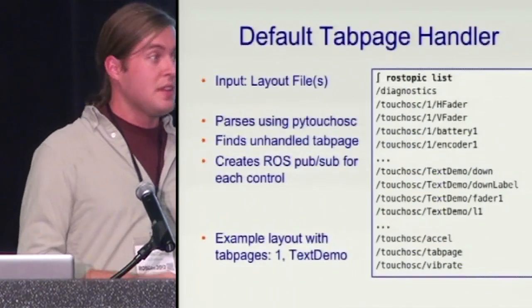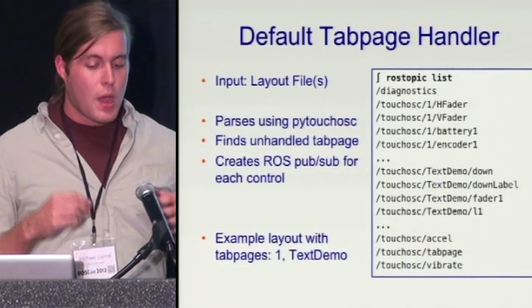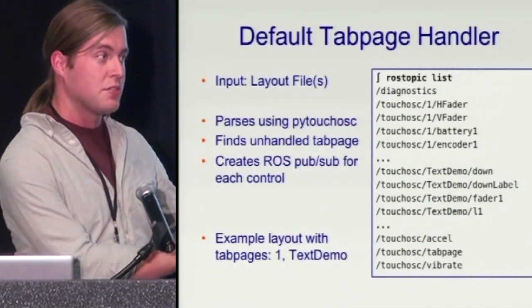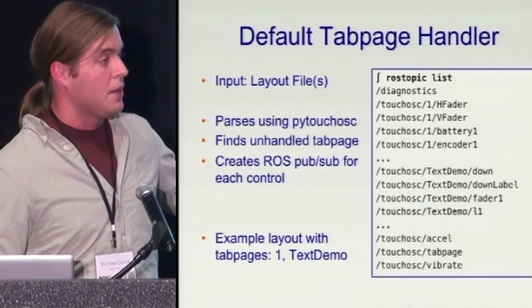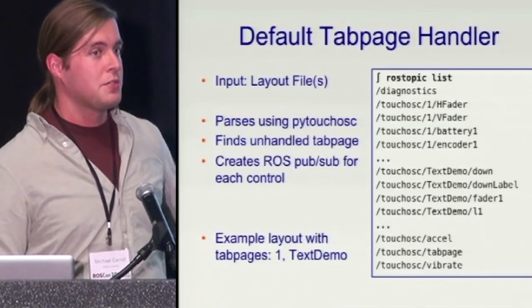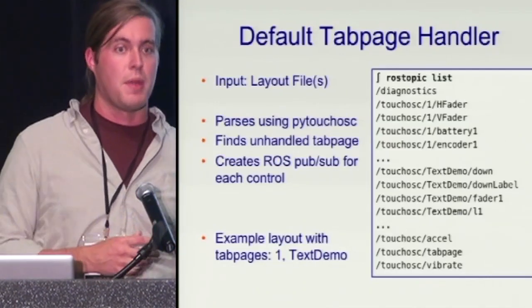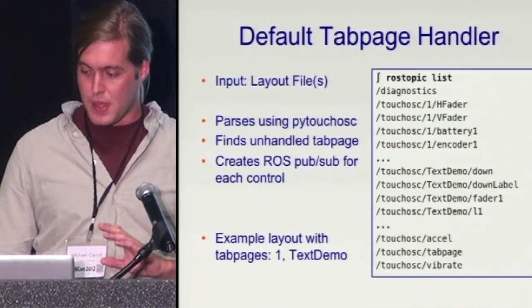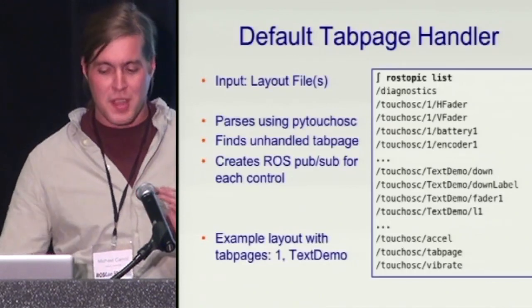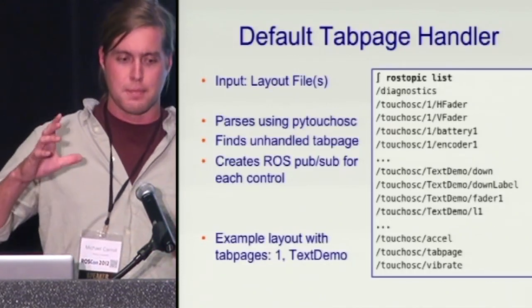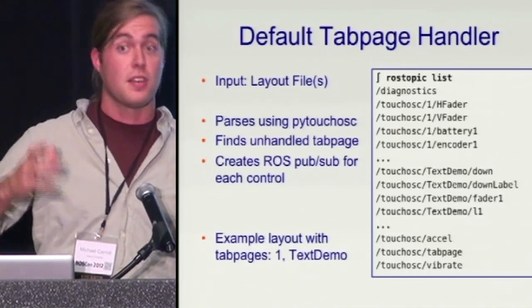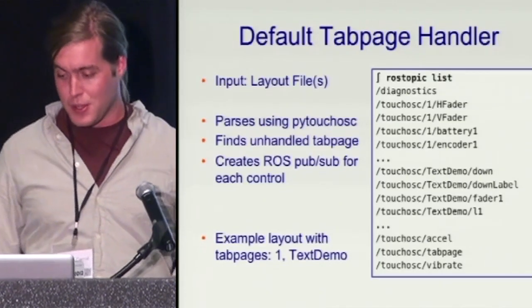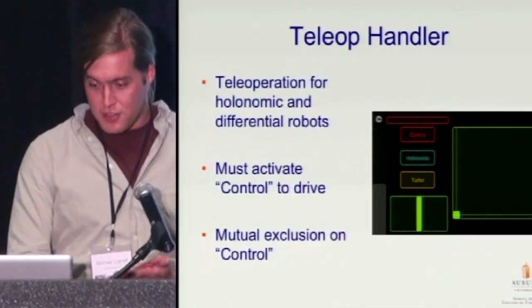When you fire up your iPhone using TouchOSC, Bonjour allows it to just show up in a list. You click and everything auto-configures — host name, ports, everything — without having to remember any of that. For interacting with tab pages, there's a default tab page handler: you give it a layout file, it provides a layout server, you load it on your iPhone, and if you can finish the ROS tutorials, you can move sliders and dials and get information back. It's basically 25 lines of code.